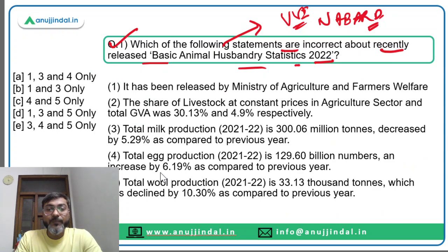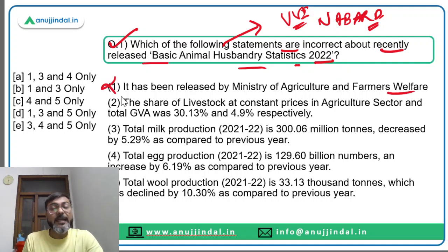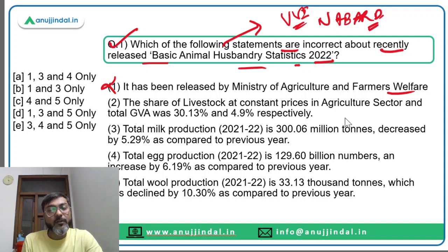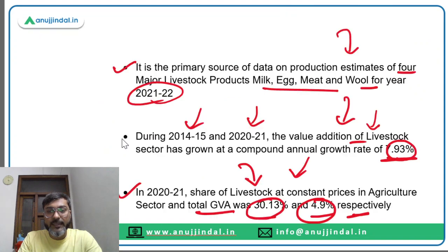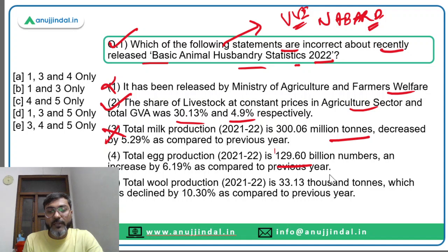Now let's identify the incorrect statements. The report was released by the Ministry of Fisheries, Animal Husbandry and Dairying — not the Ministry of Agriculture and Farmers Welfare — so that statement is incorrect. Total milk production is 221.06 million tons, not 300.06 million tons — so that is also incorrect. Total egg production is 129.60 billion numbers and total wool production is 33.13 thousand tons. Therefore statements one and three are incorrect, making option B the correct answer.